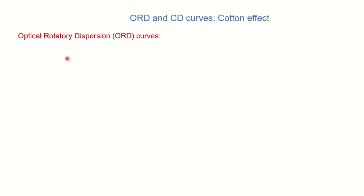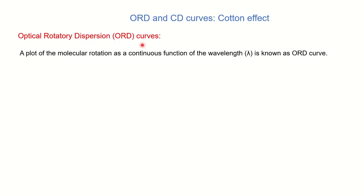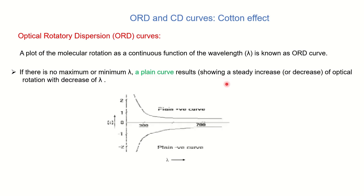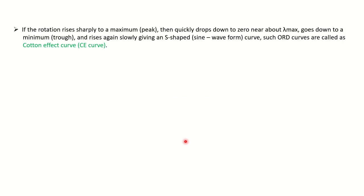First we will see what ORD curves are. ORD means Optical Rotatory Dispersion curves. When you have a plot of molecular rotation with respect to wavelength, it is called an ORD curve. In this curve there is no maximum or minimum wavelength — a plane curve results, showing a steady increase or decrease of the optical rotation with the decrease of wavelength. This is considered a plane curve, and one can use it for structural investigation of organic molecules.